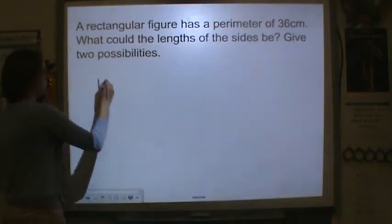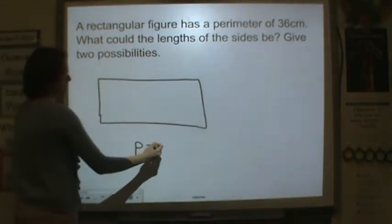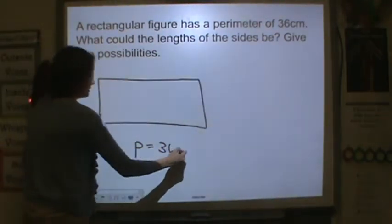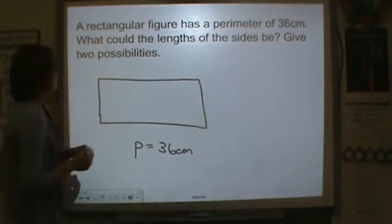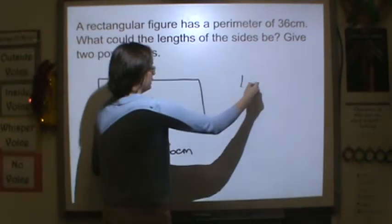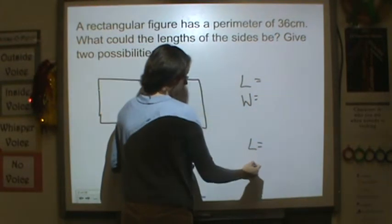A rectangular figure, so I'm going to draw a rectangle, has a perimeter of 36 centimeters. What could the lengths of the sides be? Give two possibilities. So I need to find what length or width could equal.